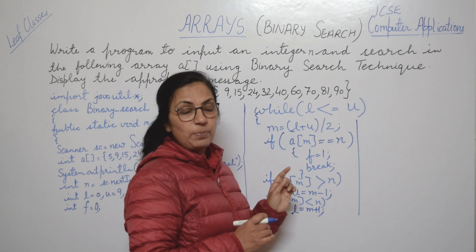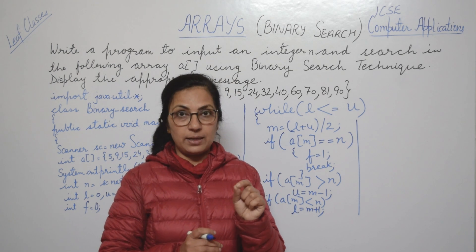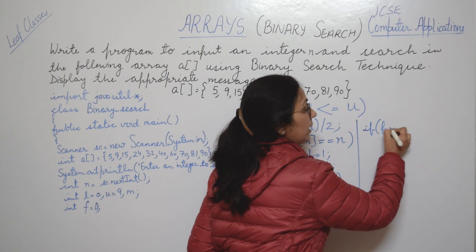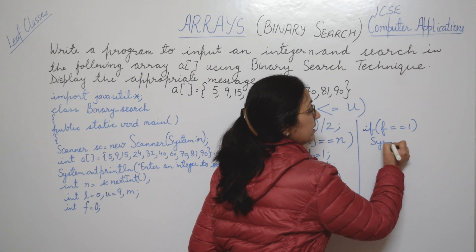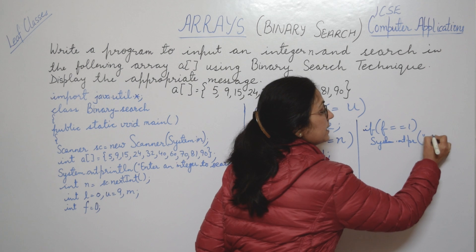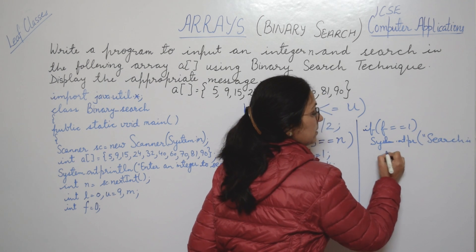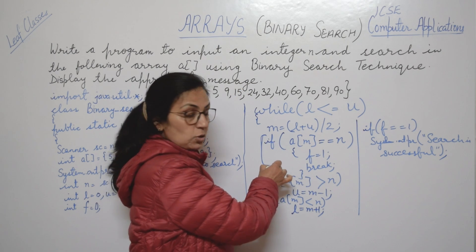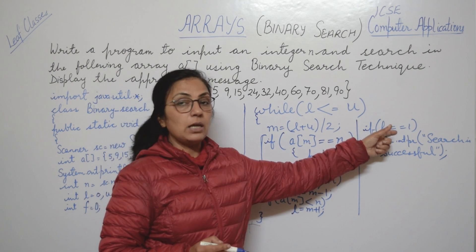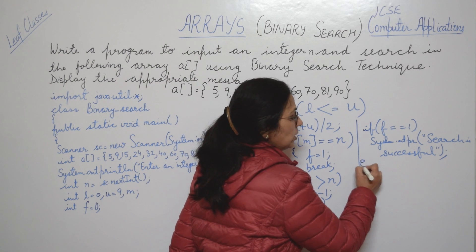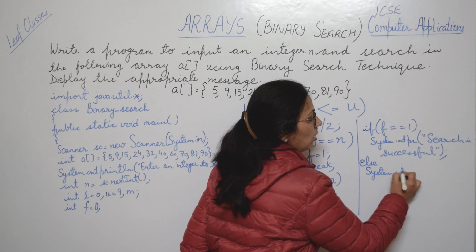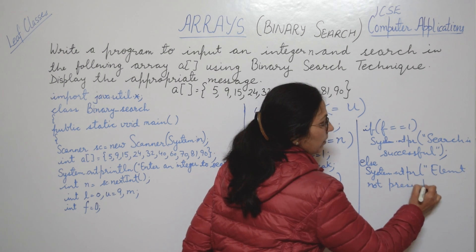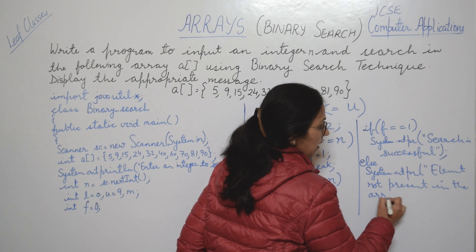After completion of the loop, if the indicator f equals 1 — meaning the value was matched — we print: 'Search is successful'. Otherwise the value of f remains 0, meaning the element was never found, so in the else block we print: 'Element not present in the array'.